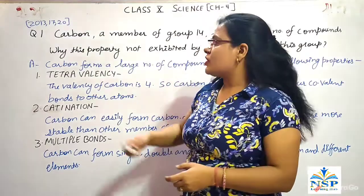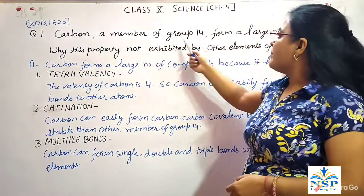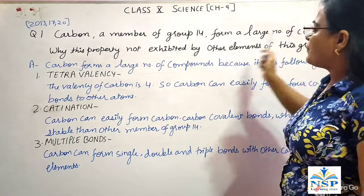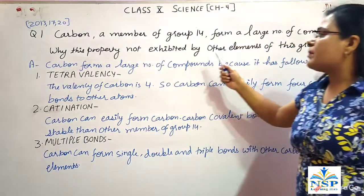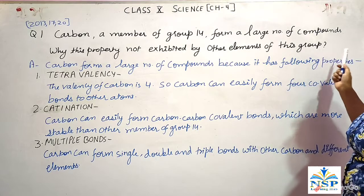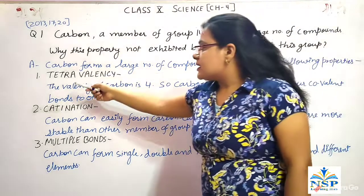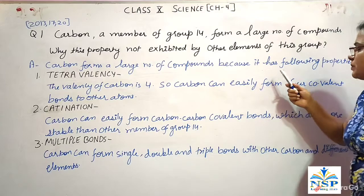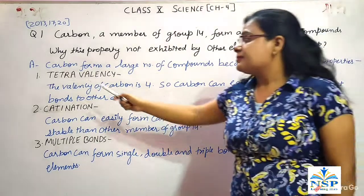Our first question is: Carbon, a member of group 14, forms a large number of compounds. Why does this property not exhibit by other elements of this group? Answer: Carbon forms a large number of compounds because it has the following properties.